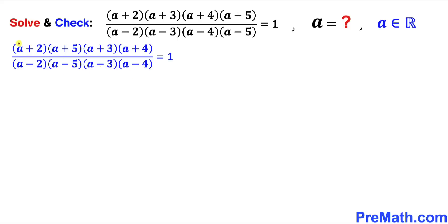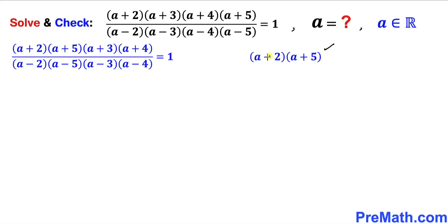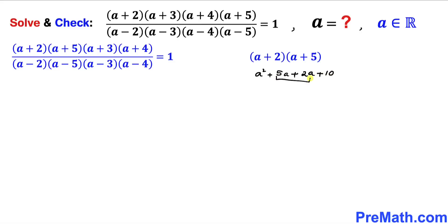Now let's focus on the first two terms (a+2) and (a+5) and multiply them out using double distribution. That gives us a² + 5a + 2a + 10. Combining like terms, we get a² + 7a + 10.